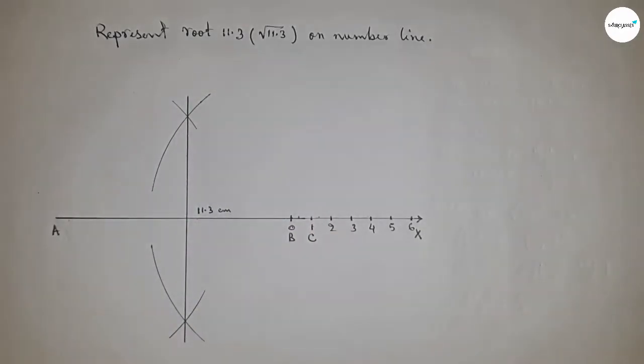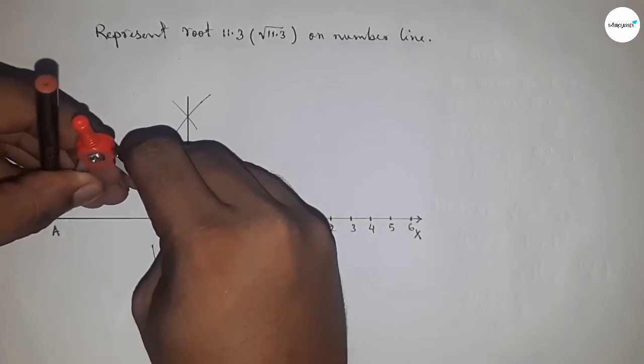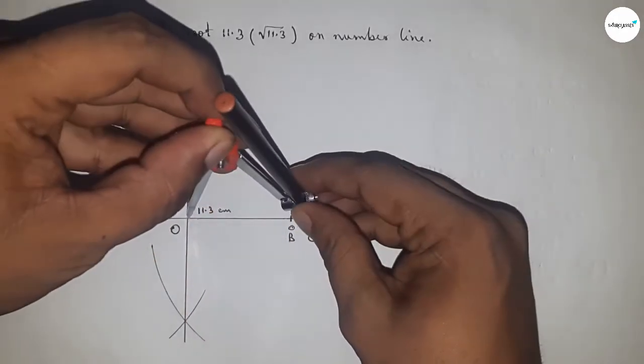Which intersect at a point O. Now taking the length OA and OC to draw a semicircle.